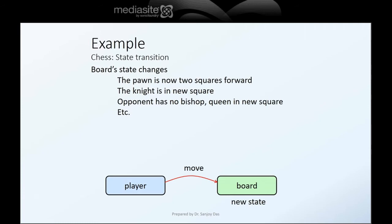As a result of the move, the state of the board changes. The board is referred to as the environment here and the player is an agent. There is a state transition in the board — the pawn could be two squares forward, the knight could be on a new square, or the opponent's bishop would be missing and the queen in its place. The state can be all possible board positions; there are so many of them.